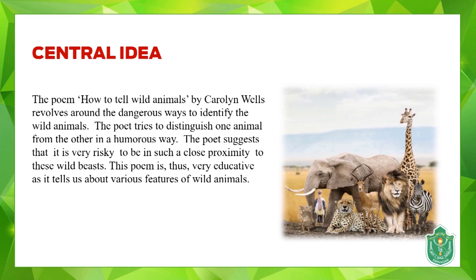The central idea of the poem 'How to Tell Wild Animals' by Carolyn Wells revolves around the dangerous ways to identify animals. The poet gives us ways of distinguishing these animals in a humorous way, and also suggests that it is very risky to be in close proximity to wild animals. However, the poem is also educative — it tells us what a lion, tiger, and leopard look like and their different features, while also creating a lot of humor.